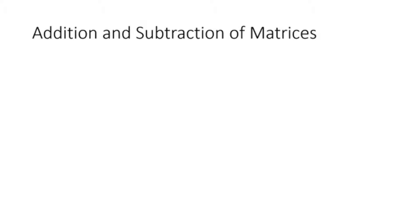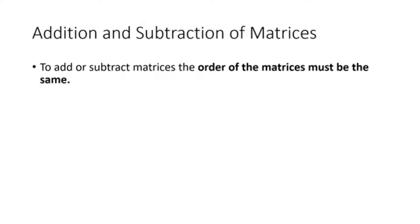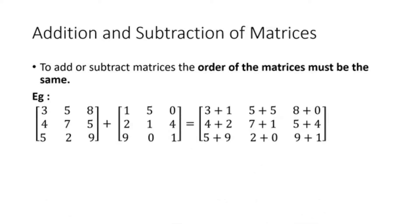Next we are going to see how to add and subtract matrices. To add or subtract matrices, the order of the matrices must be the same. Taking an example, both matrices being added are three by three matrices, so the order is the same. When adding, you add the corresponding elements of the two matrices to get the final answer.